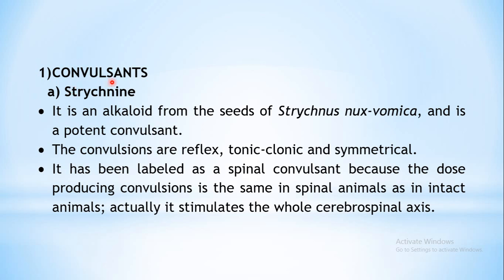Coming to the first class, convulsants. The first drug is strychnine. It is a naturally occurring alkaloid obtained from the seeds of Strychnos nux-vomica. It is a very potent convulsant — upon administration it results in convulsions that are reflex, tonic-clonic, and symmetrical. This drug is known as a spinal convulsant.